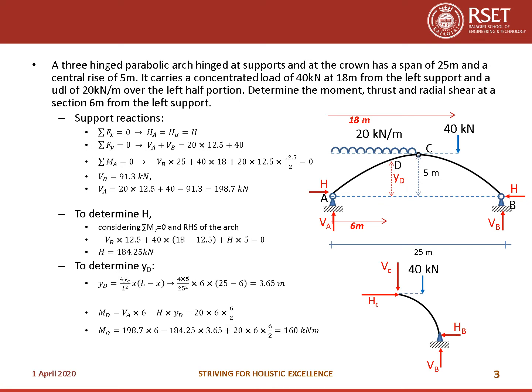The moment at point D: taking the free body diagram from A to D, MD = VA × 6 − HA × YD − 20 × 6 × (6/2). VA × 6 is clockwise, HA × YD is anticlockwise, and 20 × 6 × 3 is anticlockwise. Substituting values gives MD = 160 kN·m.